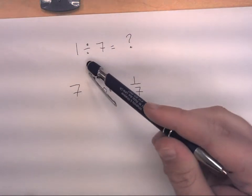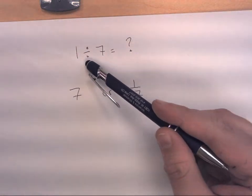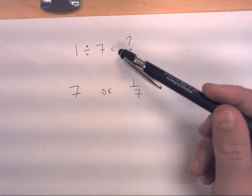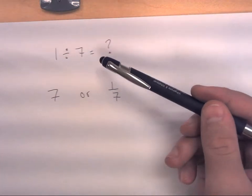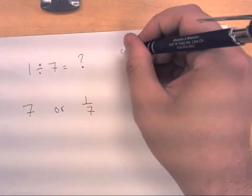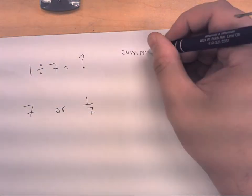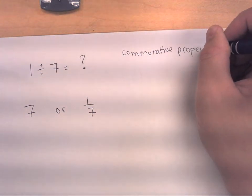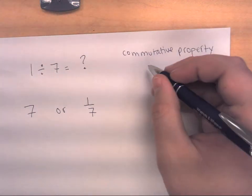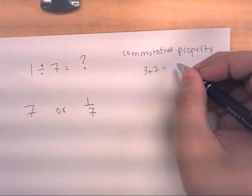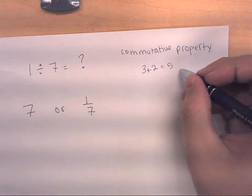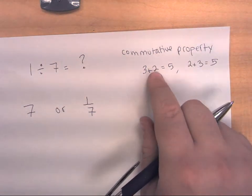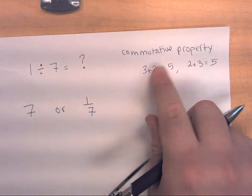Students were incorrectly applying the commutative property to division. Unfortunately, the commutative property is only valid for addition or multiplication. The commutative property basically states that if three plus two equals five, then two plus three also equals five — you can switch the addends around and get the same sum.